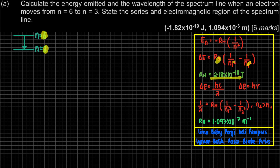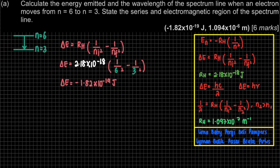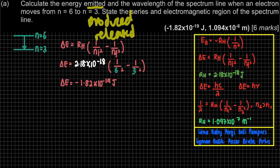The Rydberg constant RH must be in joules since this is delta E. Once you substitute the values, you will get delta E = -1.82×10⁻¹⁹ joules. Energy emitted means energy produced or energy released — that's why the value is negative, to show that the energy is released.